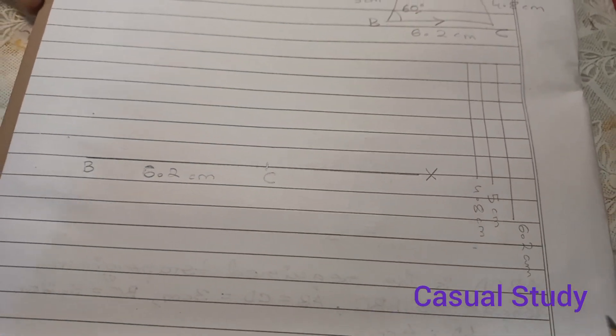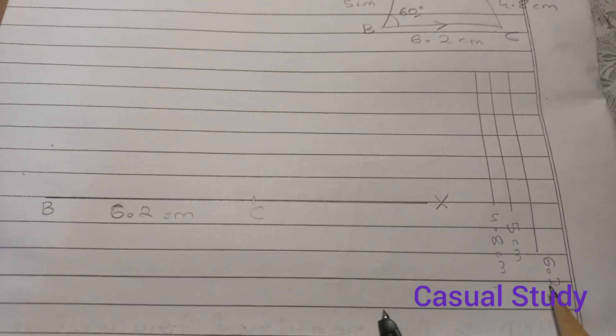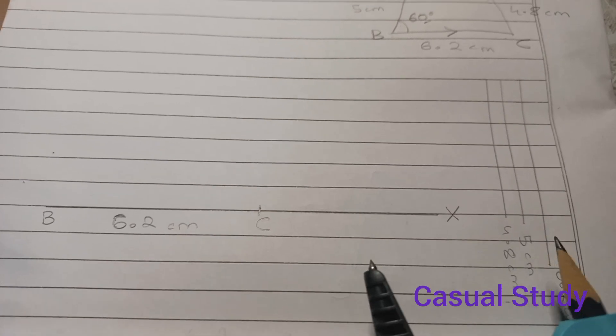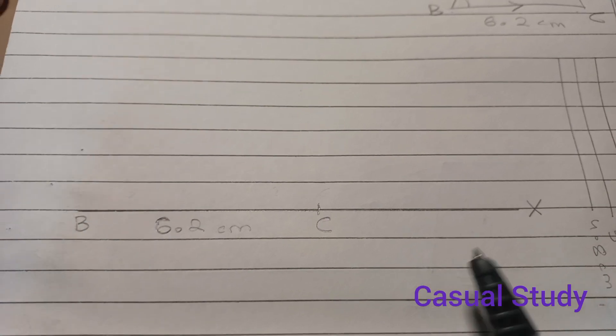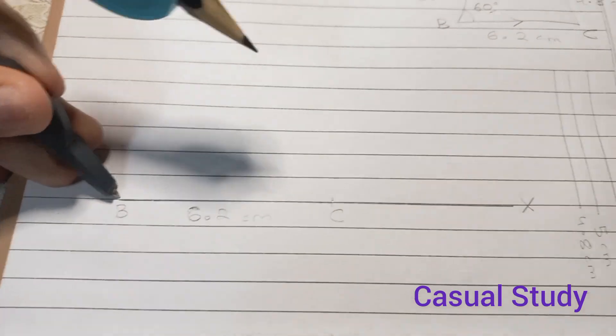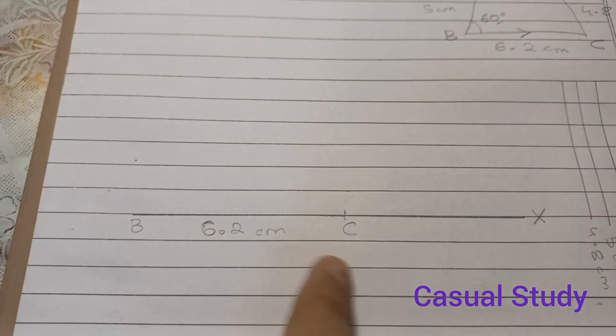So let us take the measurements. I have taken the measurements 6.2 cm, 5 cm, and 4.8 cm here. Now I have already drawn a line and taken the measurement of 6.2 cm and then cut the required arc. I put my pointer at B and then cut the required arc at C. So BC is equal to 6.2 cm.